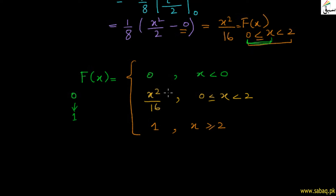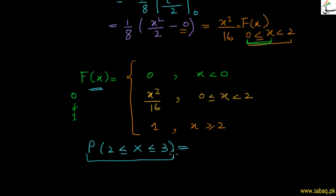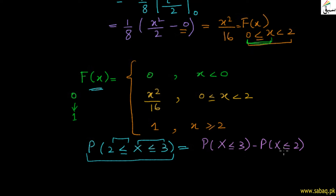Now let's see how we can use the cumulative distribution function with an example. Suppose we need to find the probability that x is between 2 and 3. We use the definition of probability: large limit minus lower limit. So we write P(2 ≤ X ≤ 3) = P(X ≤ 3) minus P(X ≤ 2), which equals F(3) minus F(2).